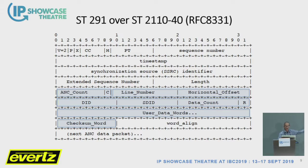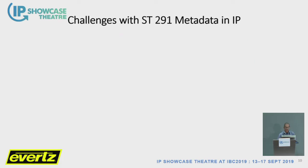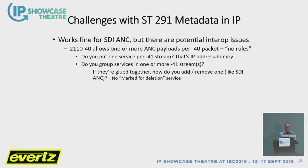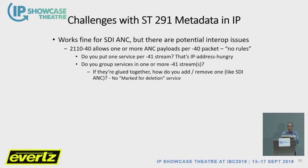Here's what ST291 does — this is the actual payload that's transported. I've highlighted in blue the pieces that are actually the ST291 payload. That's right out of SDI; we're simply wrapping it in IP. There are challenges with ST291 when we use it in 2110-40. One is we can put one or more ancillary payloads into a dash-40 packet — there's really no rules. Do you put one service in each dash-40 stream? Well, that's IP address hungry. Or do you group services into one or more streams? And if they're glued together, how do you add or remove one — like in SDI where we have, for example, a marked-for-deletion service?